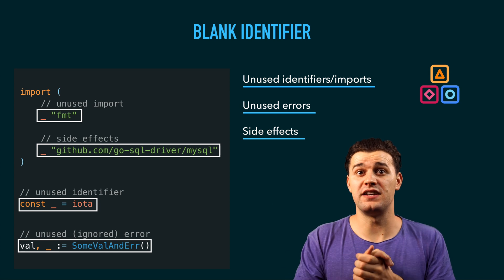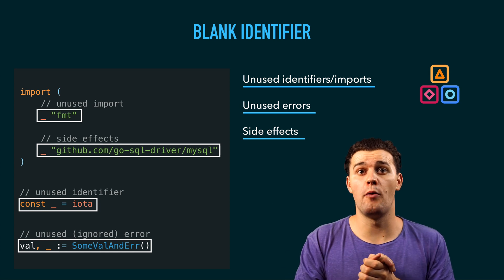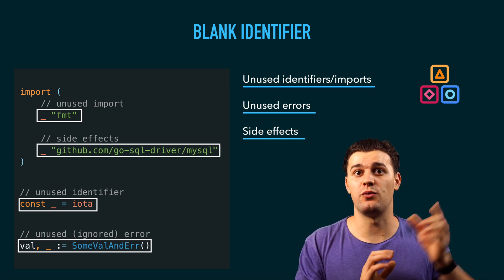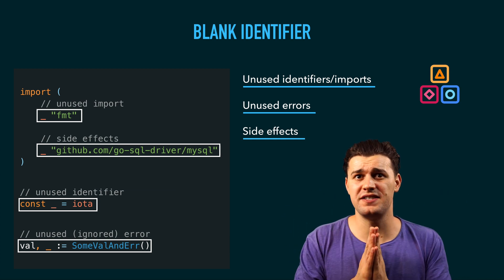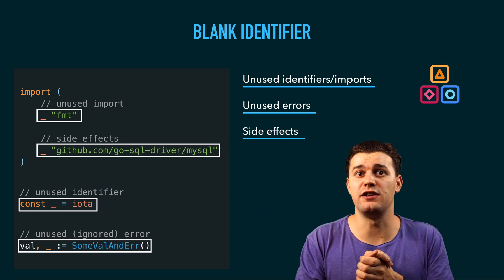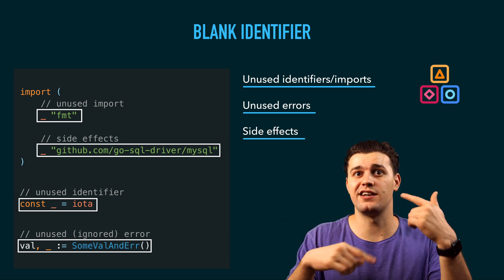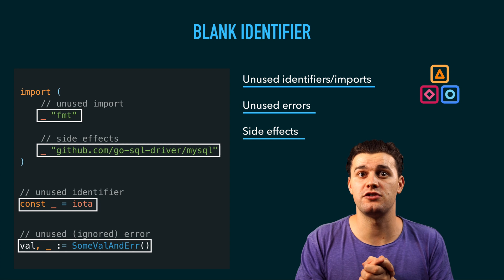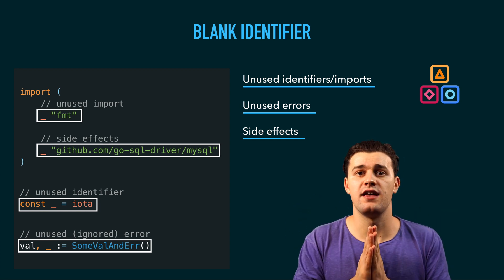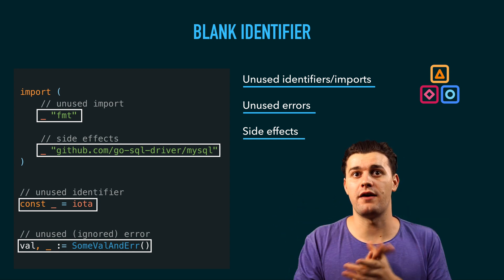Finally, the blank identifier is used for side effects, which means it's going to call the init function of that package. We talked about the init function in a previous Go tutorial, so make sure to check that out. Basically, side effects will call the init function which does some initialization — in our case, it's the MySQL driver.